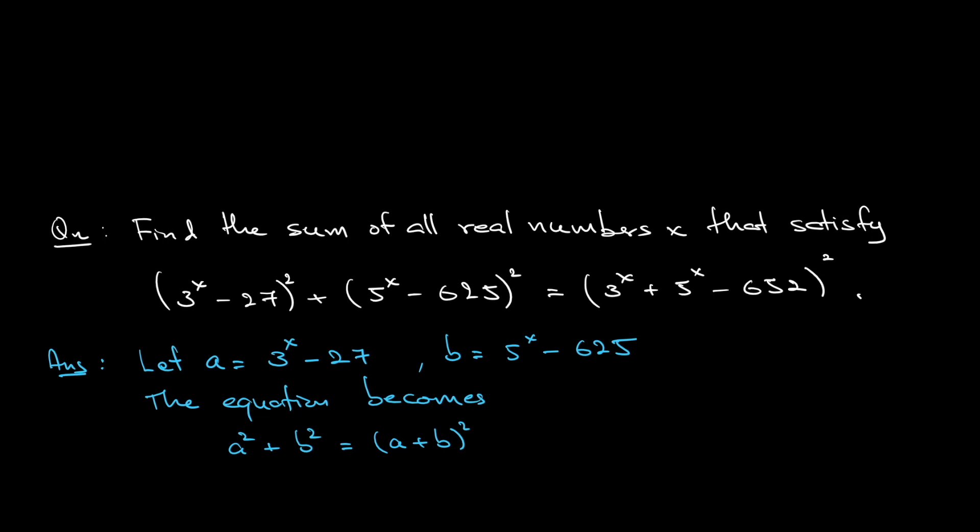If you expand (a + b)², you will get a² + 2ab + b². Canceling out a² and b² would mean that 2ab = 0. That means ab = 0, so either a = 0 or b = 0.